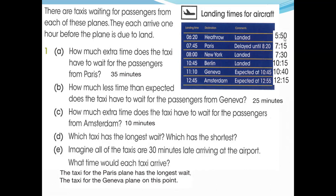Calculating the new taxi arrival times with 30 minutes late: 6:20 minus 30 equals 5:50; 8:30 minus 30 equals 8:00; 10:45 minus 30 equals 10:15; 11:10 minus 30 equals 10:40; and 12:45 minus 30 equals 12:15. These are the new arrival times if all taxis are 30 minutes late.